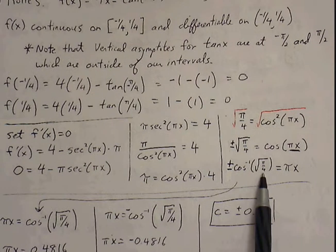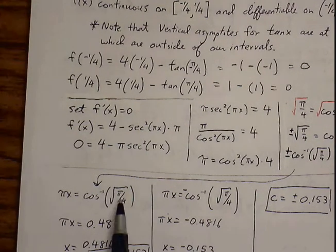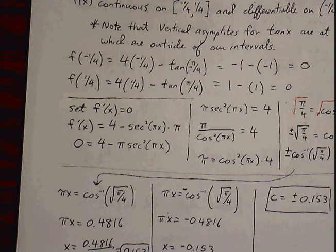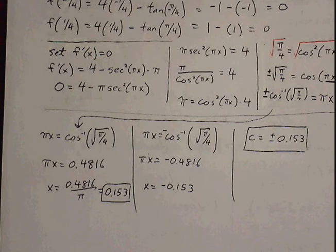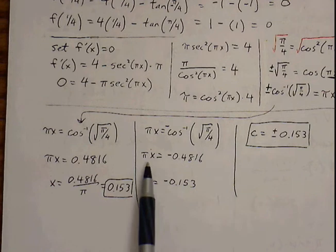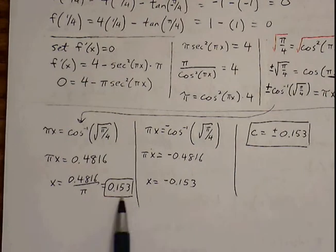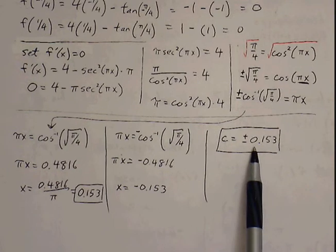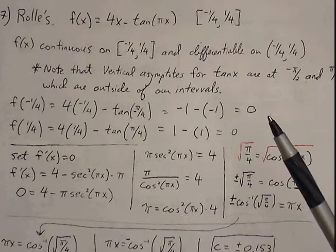Using a calculator in radian mode: inverse cosine of square root of pi over 4 equals 0.4816. Dividing by pi gives x equals 0.153. For the negative version: pi x equals negative inverse cosine of square root of pi over 4, so pi x equals negative 0.4816, giving x equals negative 0.153. We have two c values: 0.153 and negative 0.153. Both values fall within our closed interval of negative one-fourth to one-fourth.